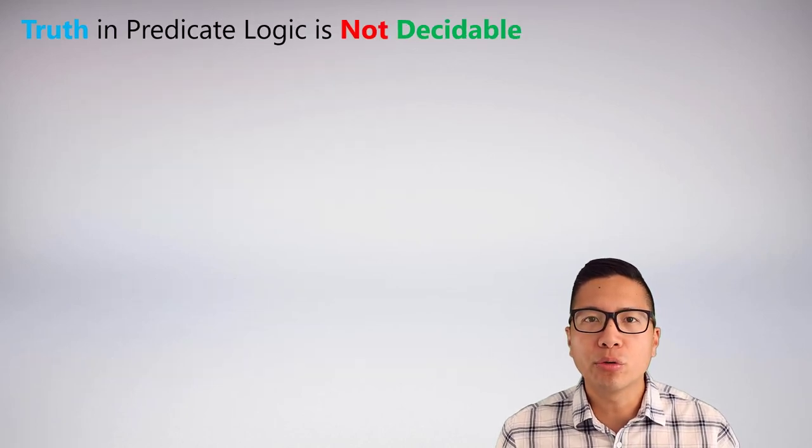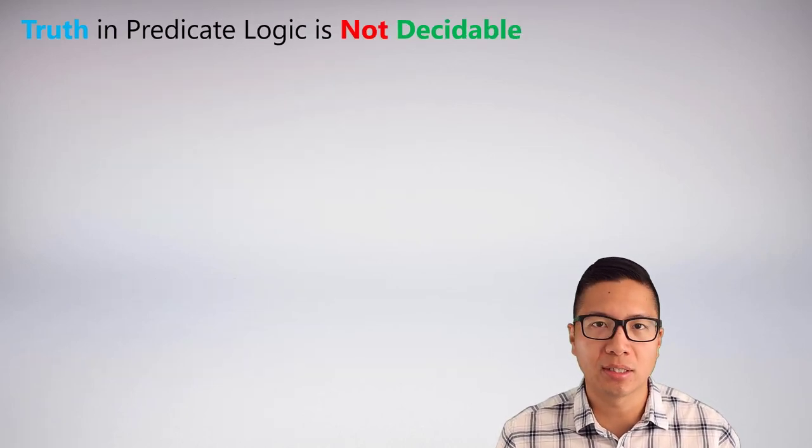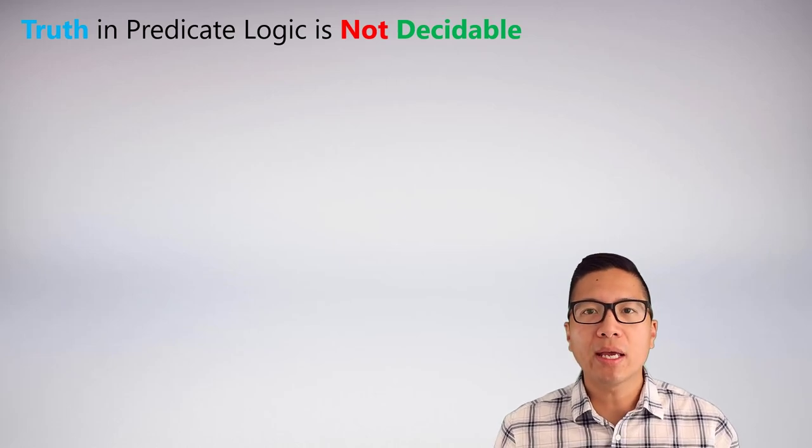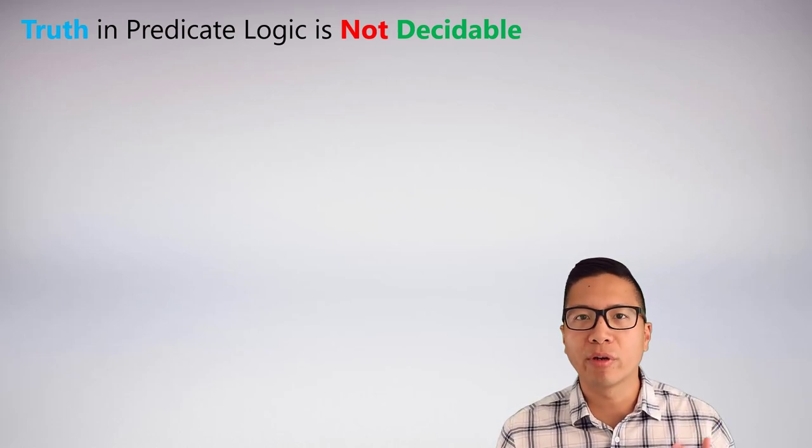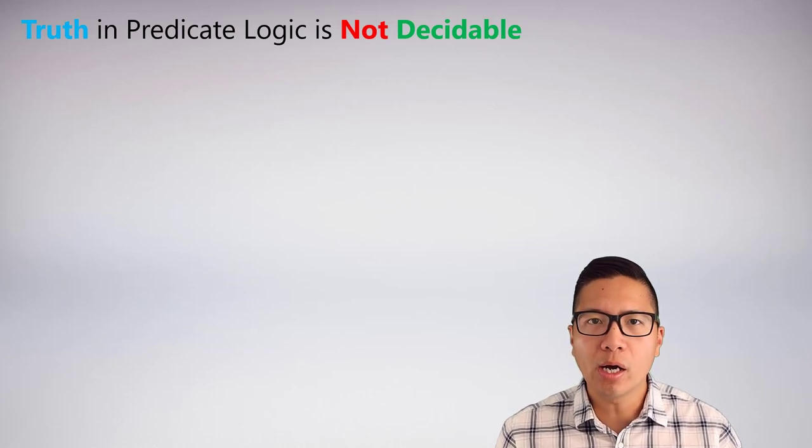The problem, though, is that truth in predicate logic is not decidable in the same way. We can't just give statements to a computer and say, figure everything there is to know out. And the question is, why?